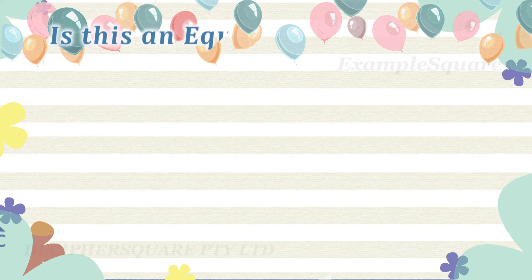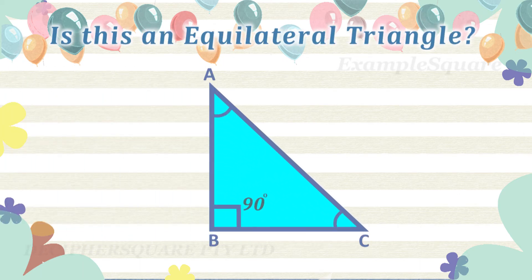Is this an equilateral triangle? No, this is not an equilateral triangle as one of the angles shown is 90 degrees. In an equilateral triangle, all three angles are equal and the measure of each angle is 60 degrees.